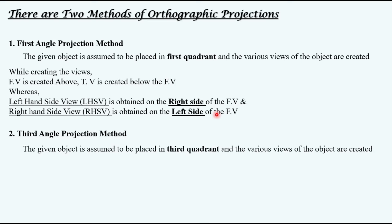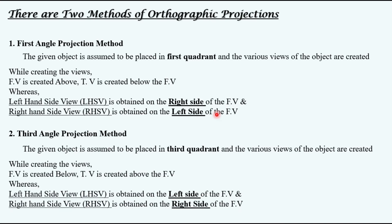While using the third angle projection method, the given object is assumed to be placed in the third quadrant and the various views of the object are created. While using this method you have to remember that the front view is created below, the top view is created above the front view, whereas the left-hand side view is obtained on the left side of the front view and the right-hand side view is obtained on the right side.